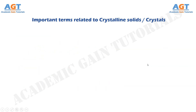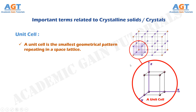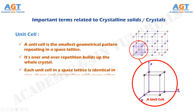A unit cell is the smallest geometrical pattern repeating in a space lattice. Its over and over repetition builds up the whole crystal. It is formed by drawing a network of straight lines through selected lattice points. Each unit cell in a space lattice is identical in size, shape, and orientation with every other unit cell. This figure shows a unit cell by comparing it with the space lattice.